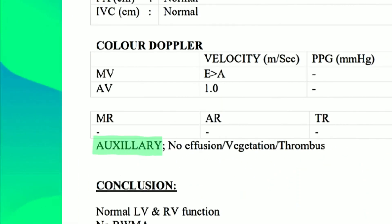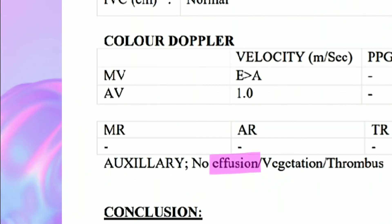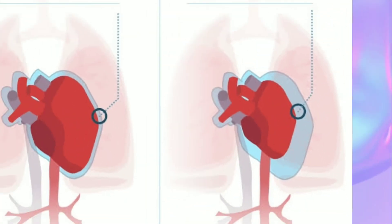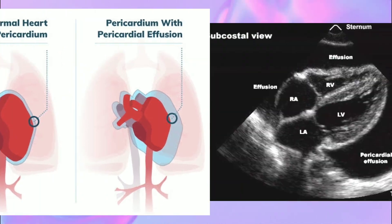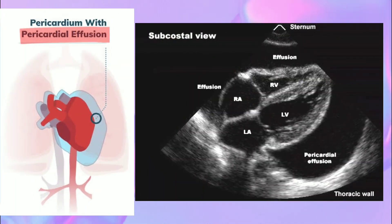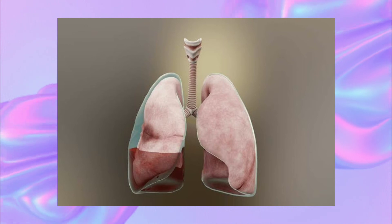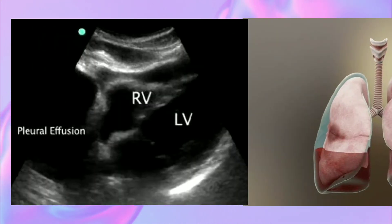Other important information from the 2D-Echo: first, we have effusion, which means collection of too much fluid in the outer area of an organ. If effusion happens in the heart's outer area, it's called pericardial effusion. If effusion happens in the lung's outer area, it's called pleural effusion.